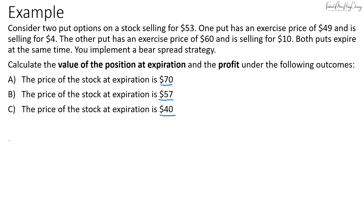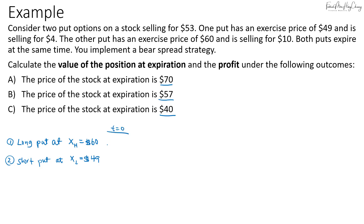Let's construct the portfolio. First, we'll have a long put position at the higher strike of $60. Then we'll have a short put position at the lower strike of $49. At time zero, the price of the long put option is $10 — we buy it, so it's an asset. For the short put we sell, so that's a liability of negative $4. The initial value of the bear spread strategy is $6.